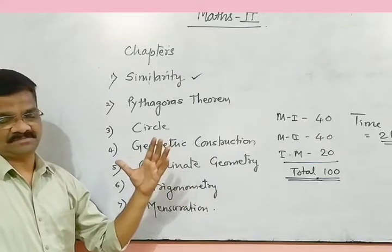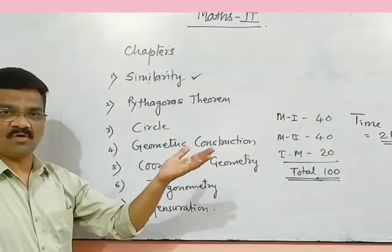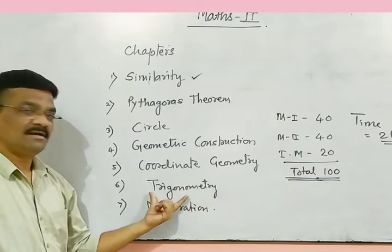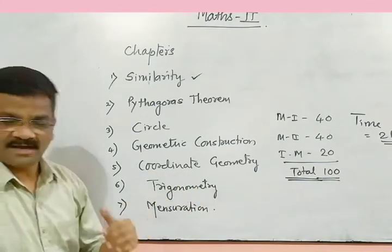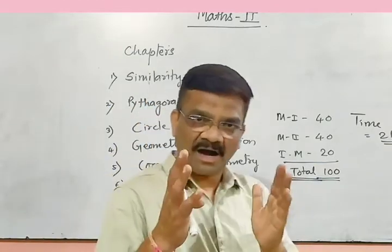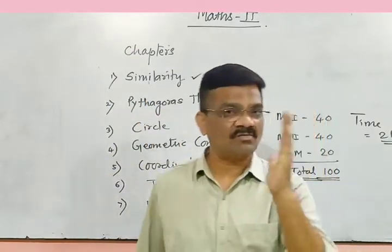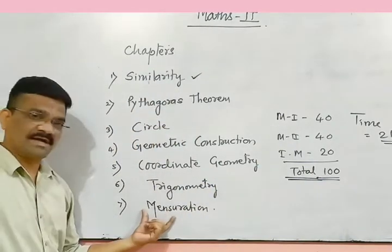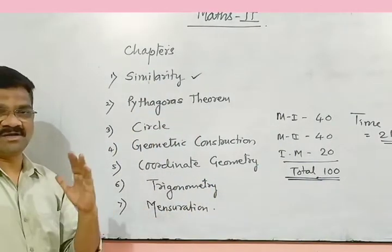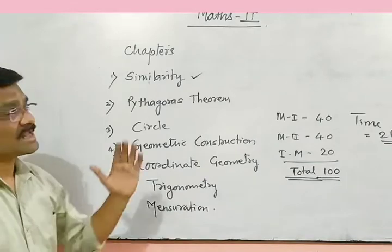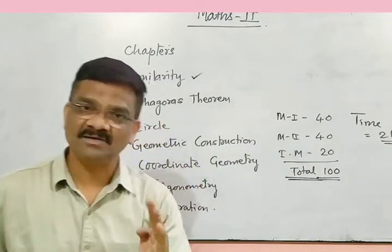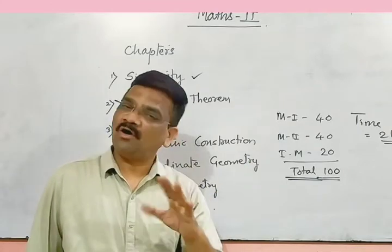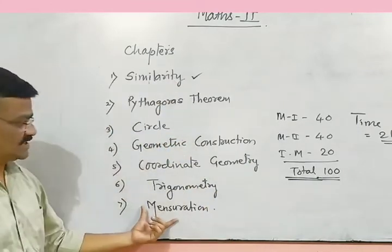Coordinate Geometry covers the distance between two points and related concepts. Trigonometry — as you know, in 9th class you studied some part of it, and in 10th class we will go further. Mensuration means height, distance, length, area, and volume — all these things are contained in Mensuration.